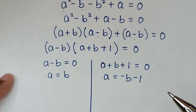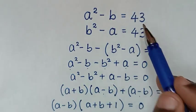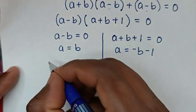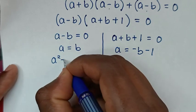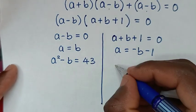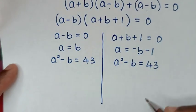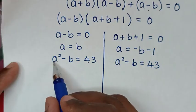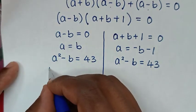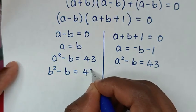We recall equation 1, which is a squared minus b equals 43. For the first solution where a equals b, we substitute a equals b into equation 1. So it becomes b squared minus b equals 43.